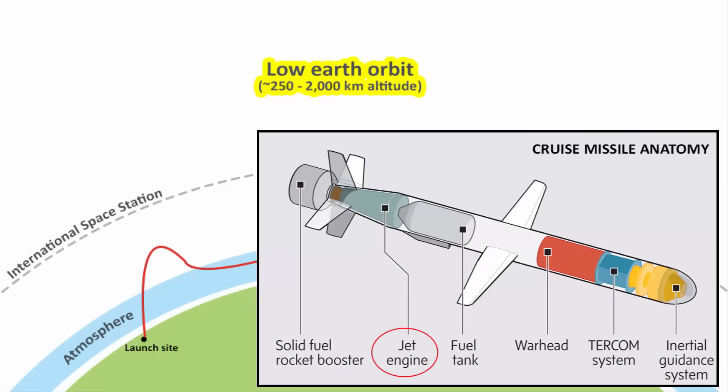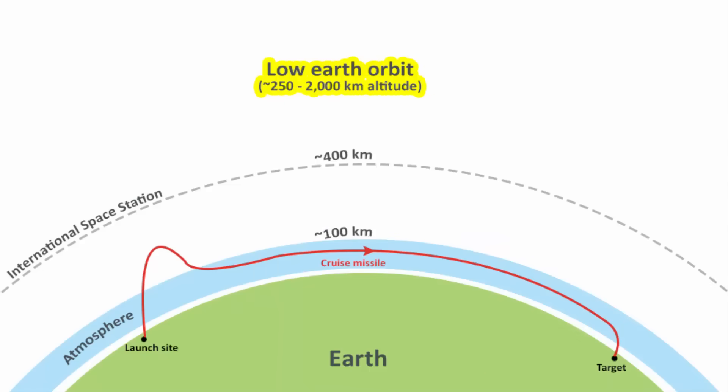They have a small inbuilt jet engine that helps the missiles to fly most of the time in the air. In addition to that, these missiles also have inbuilt navigation and they can travel at a very low altitude for avoiding enemy detection.